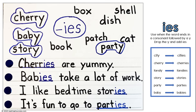Our third activity is dropping the y and adding ies when a word ends in a consonant followed by a y. Review the ies card and follow the routine.